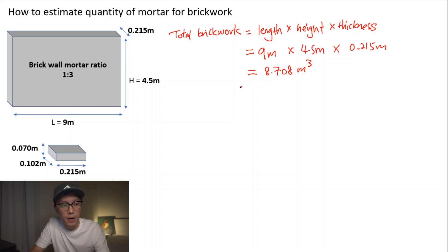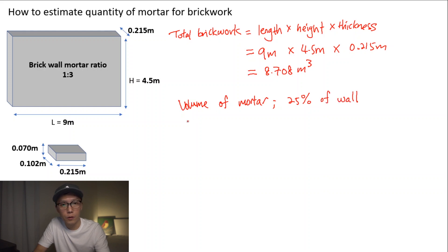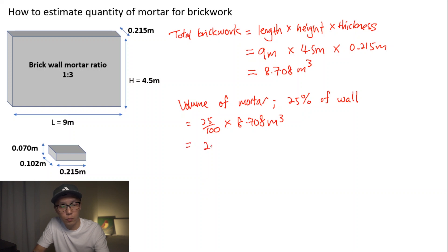Next we have to identify the volume of mortar. The volume of mortar is normally 25% of the wall volume. So 25 over 100 times the wall volume of 8.708 cubic meters gives us 2.177 cubic meters. This is the volume of mortar.